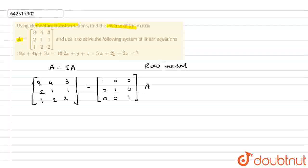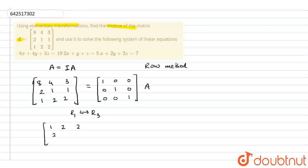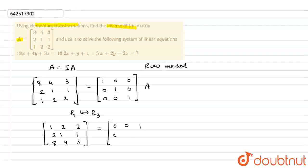The first operation we will apply is to interchange row 1 with row 3. This will become [1, 2, 2; 2, 1, 1; 8, 4, 3], equal to the identity matrix with this operation applied as well, giving [0, 0, 1; 0, 1, 0; 1, 0, 0] multiplied by A.